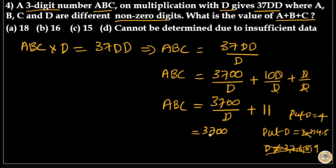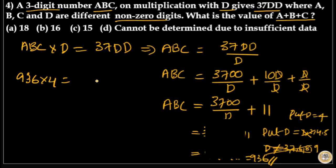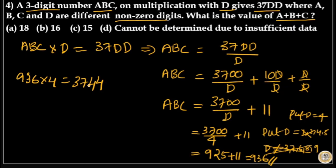With D equals 4: 3700 divided by 4 plus 11. 3700/4 equals 925, so 925 plus 11 equals 936. Checking: 936 times 4 — 6 times 4 is 24, carry 2; 3 times 4 is 12 plus 2 is 14, carry 1; 9 times 4 is 36 plus 1 is 37. So 936 times 4 equals 3744, which is correct. Therefore A plus B plus C equals 9 plus 3 plus 6 equals 18.